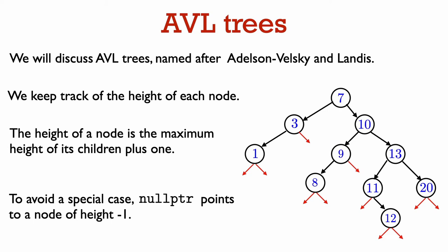AVL trees are named after their two inventors, Adelson-Welsky and Landis. In an AVL tree, we keep track of the height of each node. Remember that the height of a node is the length, that is the number of edges, of a longest path from that node to a leaf. To avoid a special case, it is useful to think of a null pointer as pointing to a node of height minus one.